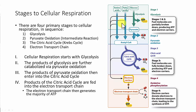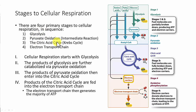Here are the overall stages of cellular respiration. There are technically four stages. Three of them are the biggest: glycolysis, the citric acid cycle (also known as the Krebs cycle), and the electron transport chain. In between glycolysis and the citric acid cycle, there's an intermediate reaction sometimes referred to as the pyruvate oxidation step. It starts with glycolysis and moves in series through these other steps. We're going to talk about each of these, but we're going to focus on glycolysis today.